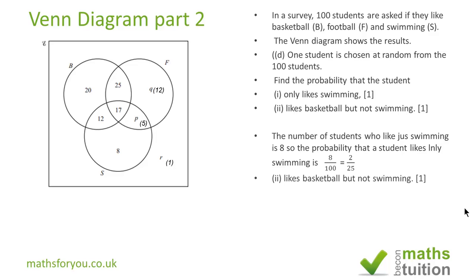Now in subsection two, we want to find who likes basketball but not swimming. So in that case, we're looking at 20 who likes basketball only and 25 who like basketball and football. And the total is 45. If you divide 45 by 100, you get 9 over 20. If you cancel the numerator by 5 and denominator by 5, you get 9 over 20.